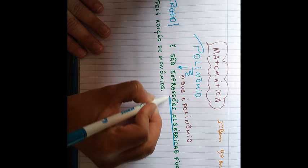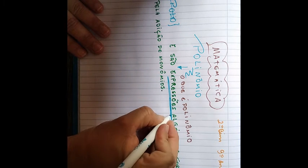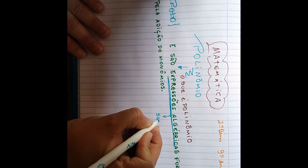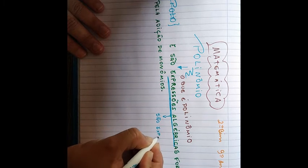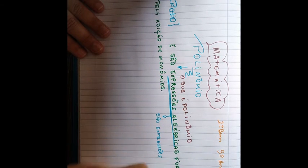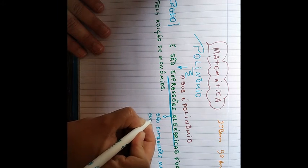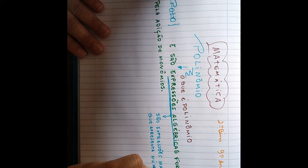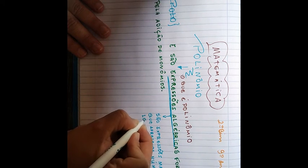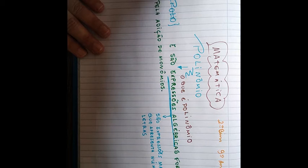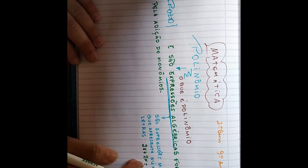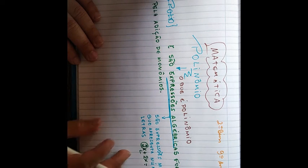Expressões algébricas são expressões matemáticas que apresentam números e letras. Um exemplo: 2x mais 2x. Aqui eu tenho uma expressão algébrica, porque eu tenho números e tenho letras.